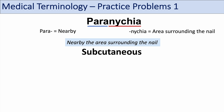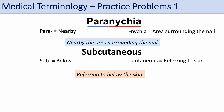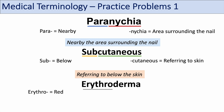The next word is subcutaneous. Breaking it down: the prefix sub means below, and the suffix cutane or cutaneous means referring to the skin. So subcutaneous means referring to below the skin. The subcutaneous layer is often below the dermis or hypodermis. The next word is erythroderma — erythro refers to the color red, and the suffix derma refers to the skin. So erythroderma means reddened skin, a condition where we can see reddened skin.